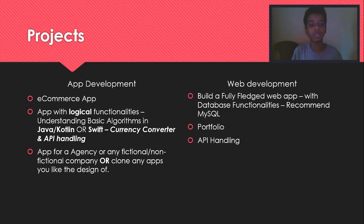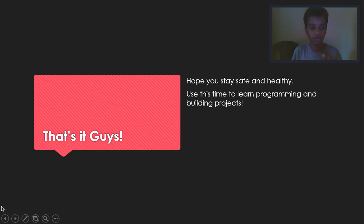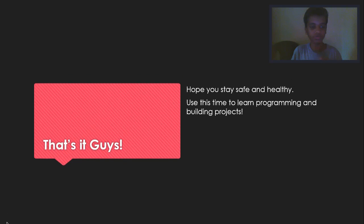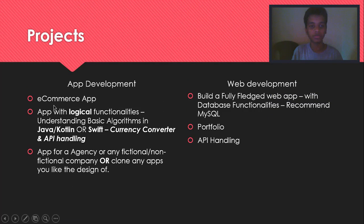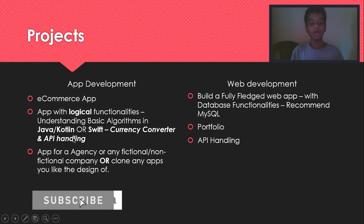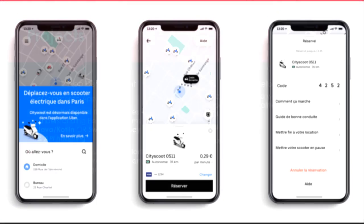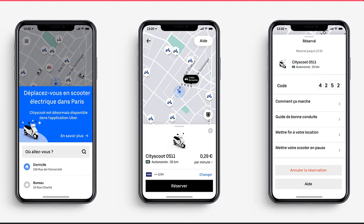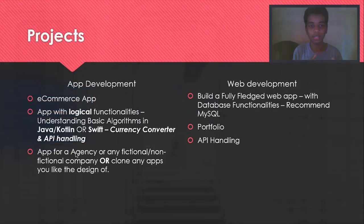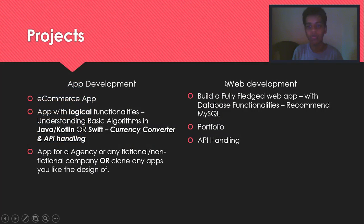The third recommendation — and I'd actually suggest doing this before the other two — is to build an agency-style app, kind of like making a clone of Uber or Instagram. It's going to be complex but will serve as a great learning curve.